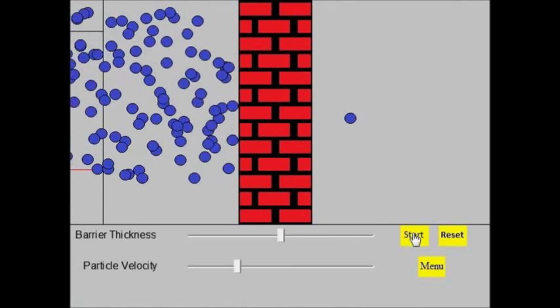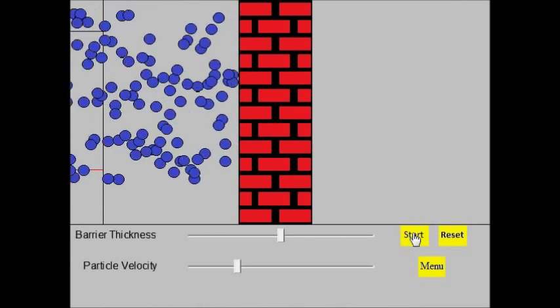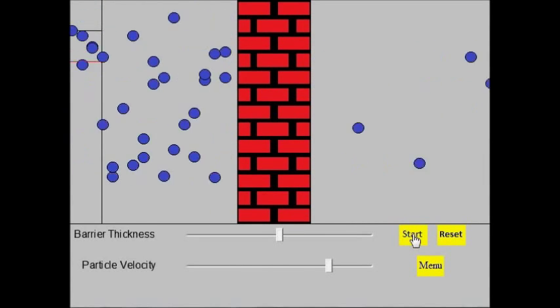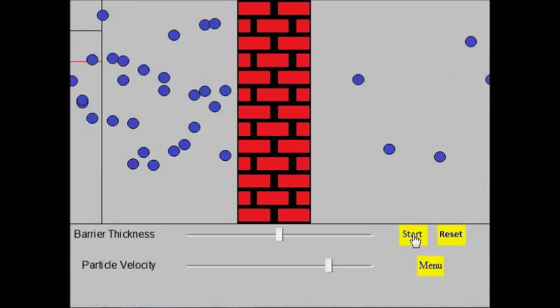The slower the particles are moving, the fewer of them get through the barrier. Speed up the particles, and more of them get through the barrier. Speed up the particles some more, and even more of the particles get through the barrier.